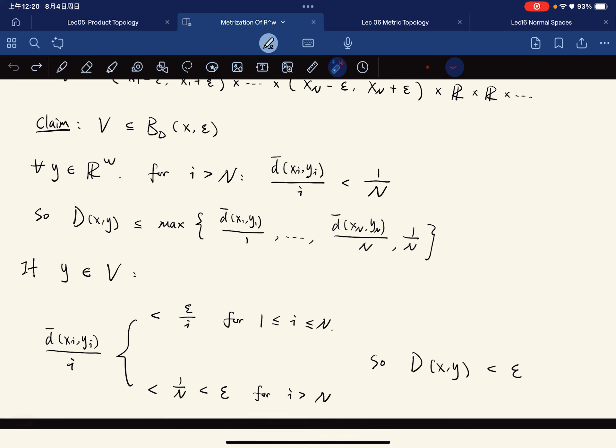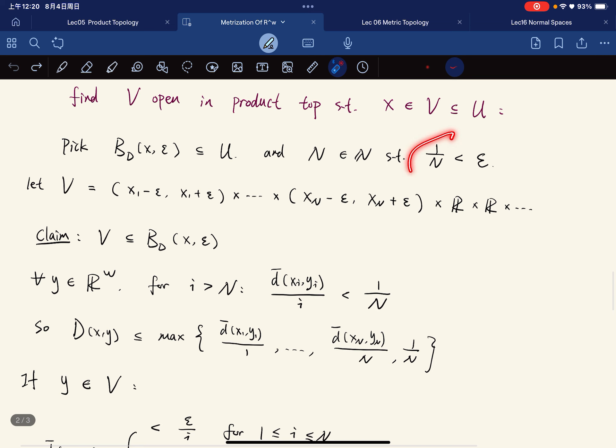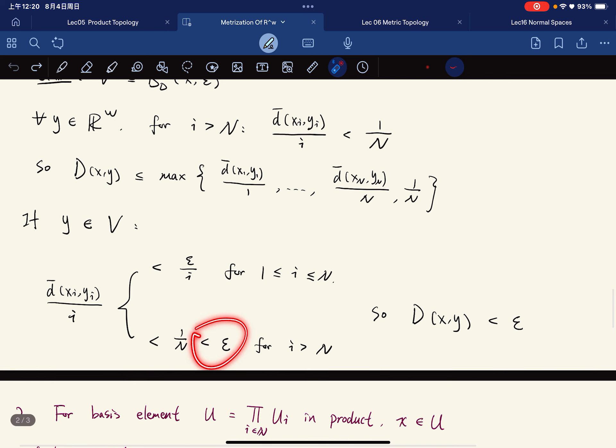And if i is greater than n, then their distance will be less than 1 over n. But we pick n such that this is true, so no matter what, for any i, this thing is bounded, it's always bounded by ε.